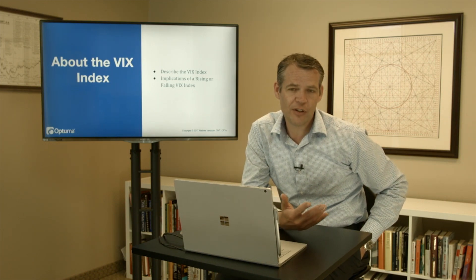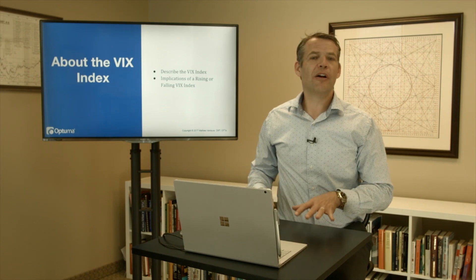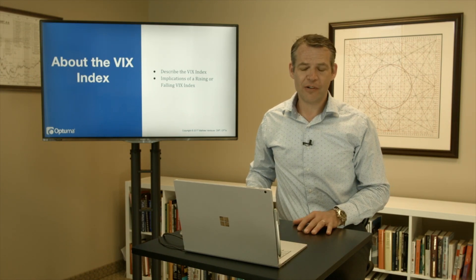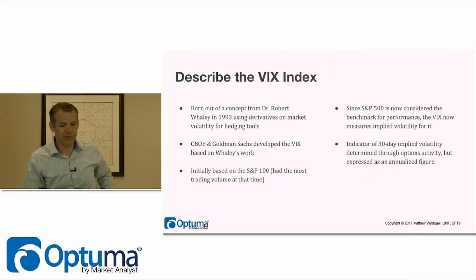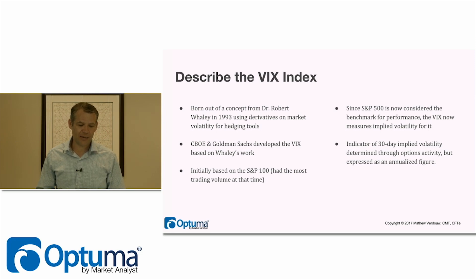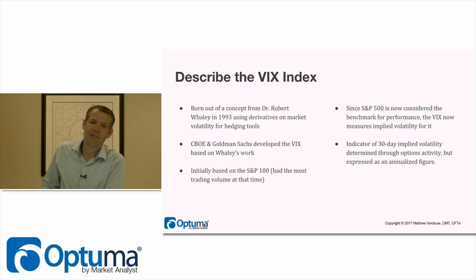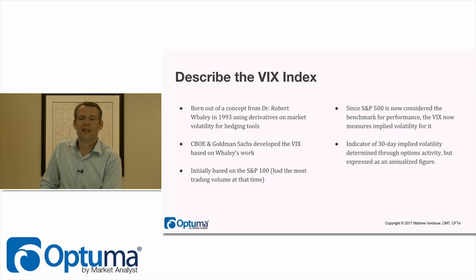We're looking at the VIX index. We talked about implied volatility last time — the VIX is the implied volatility of the S&P 500 market. It was born out of work by Dr. Robert Whaley in 1993, using derivatives for hedging tools. Eventually CBOE and Goldman Sachs got involved and developed the VIX based on his work. When first created it was on the S&P 100, but then moved to the S&P 500, which is the benchmark of performance in the markets.